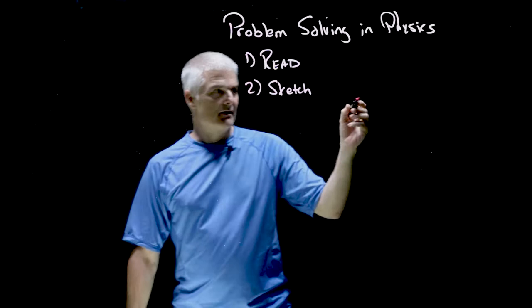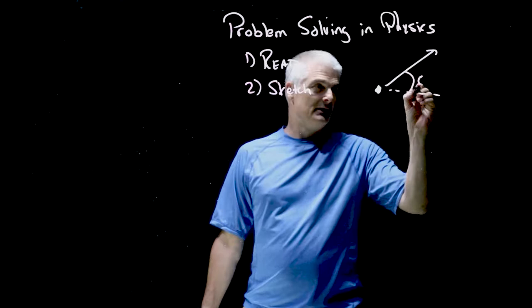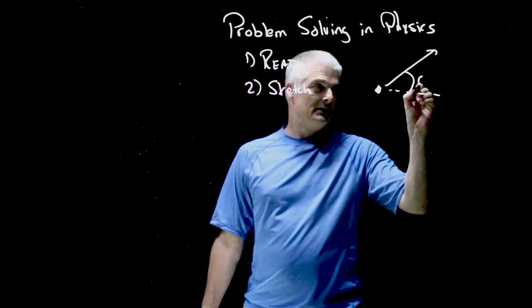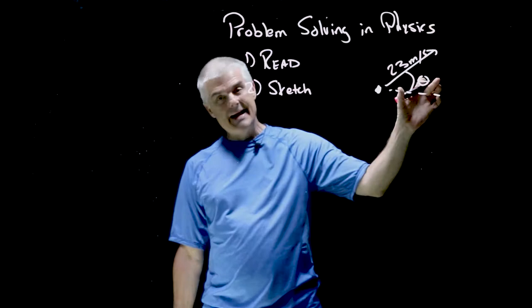You sketch something out, right? You got a ball and it's being thrown and there's an angle, theta, and what that angle is and it's going at 23 meters per second, something like that. You're going to draw out, pull out all the numbers. After you read, make a sketch.